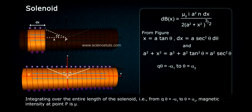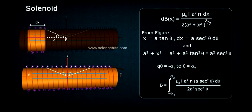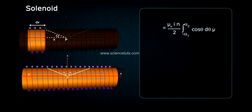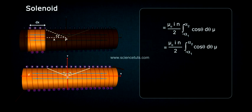Integrating over the entire length of the solenoid, that is from θ equals -α₁ to θ equals α₂, magnetic intensity at point P is B equals integral from -α₁ to α₂ of μ₀ i a² n a sec² θ dθ divided by 2a³ sec³ θ, which equals μ₀ i n by 2 integral from -α₁ to α₂ of cos θ dθ, equals μ₀ i n by 2 sin θ from -α₁ to α₂.